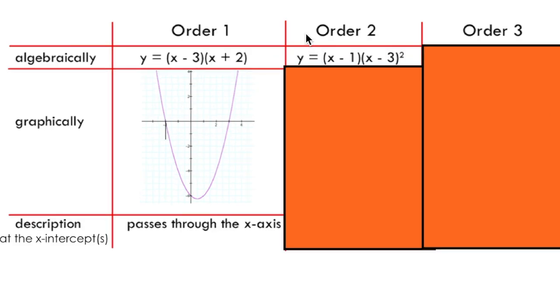Now if I show you an example of a polynomial with an x-intercept of order 2, you'll likely be able to spot the difference between it and the example of order 1 right away.